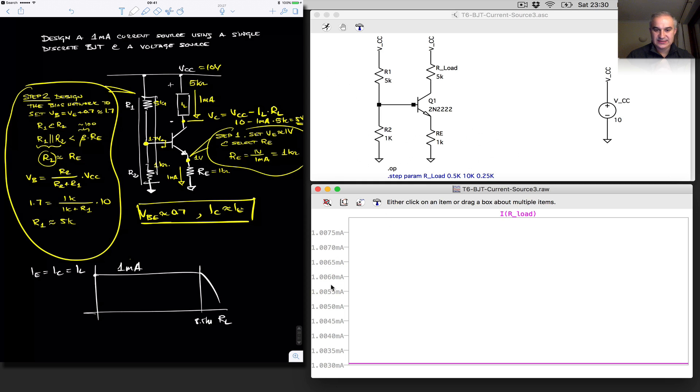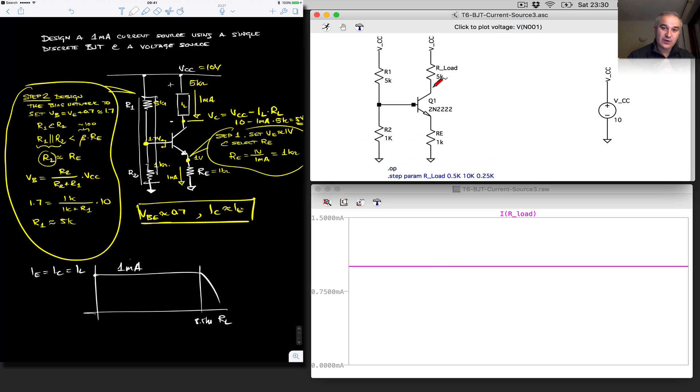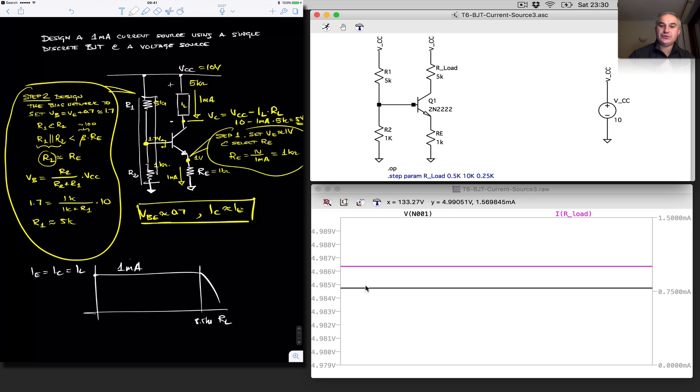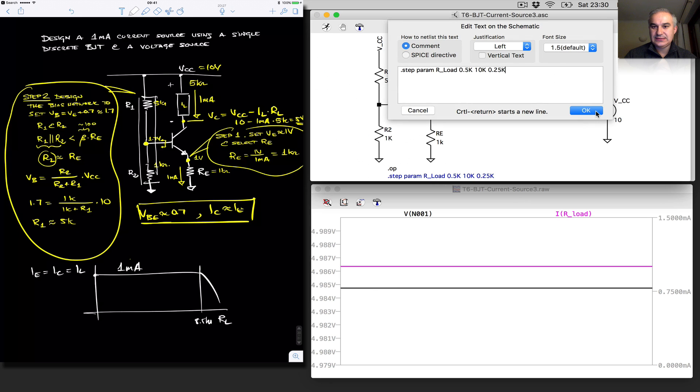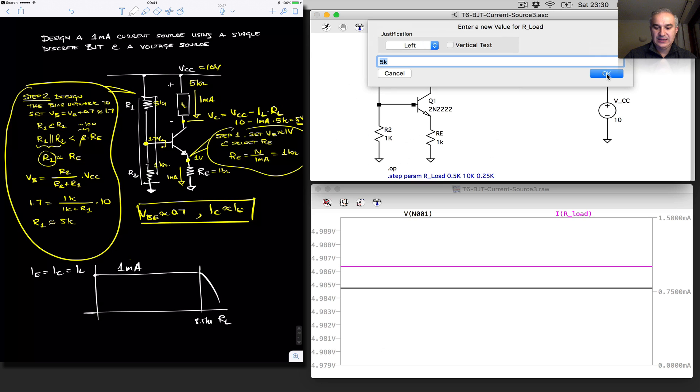Let's delete some of these things so we can see them a little bit better. Our load is 1 milli. Let me change the axis. So there you go. So this is working. The voltage at the collector should be 10 volts minus 1 milli times 1K is 5 volts. Drop is around 5 volts. We see that that's quite close. Towards the 4.985.